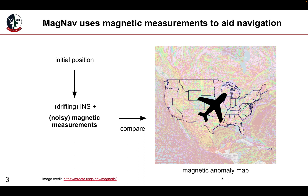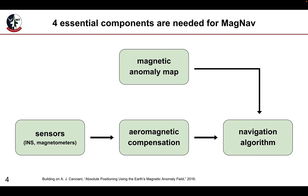Anomaly in magnetic anomaly map basically refers to the local magnetic variation in the Earth's crust. There are four essential components required for MagNav, which are the primary capabilities of the magnav.jl package. Magnetic measurements and other flight data can be read in from an H5 file. The magnetic measurements may then be compensated, which is essentially removing aircraft interference noise. This cleaned data can be fed into the navigation algorithm, which compares the measurements to a magnetic anomaly map, which is also read in from an H5 or MAT file.